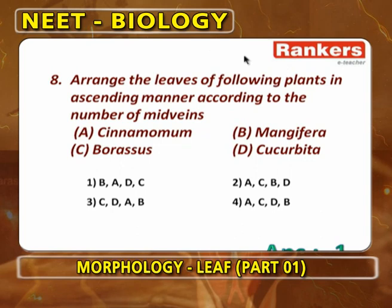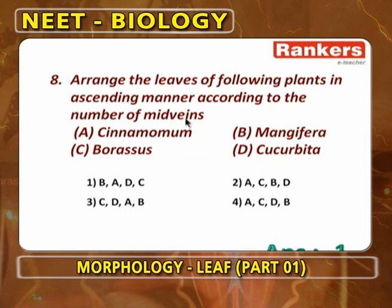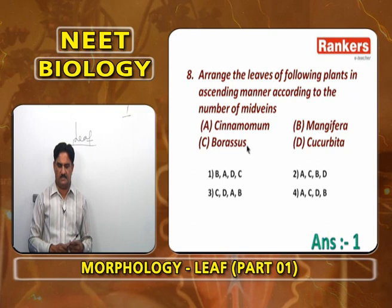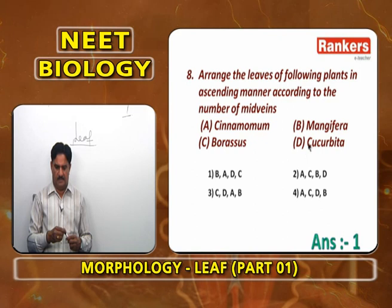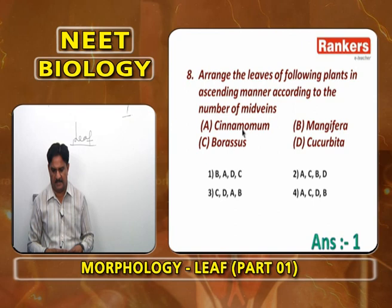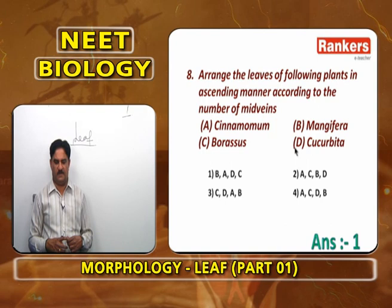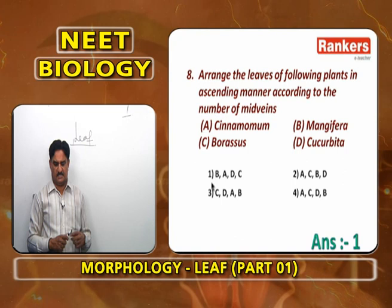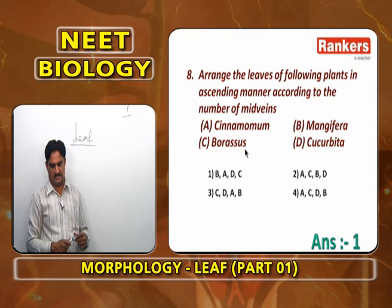Arrange leaves in ascending order based on number of midribs. Mangifera has only one midrib. Cinnamomum shows reticulate venation with a limited number of midribs arranged at the leaf apex. Cucurbita has many midribs entering individual lobes. Borassus has many midribs — palmately divergent. So ascending order: B (Mangifera), A (Cinnamomum), D (Cucurbita), C (Borassus).